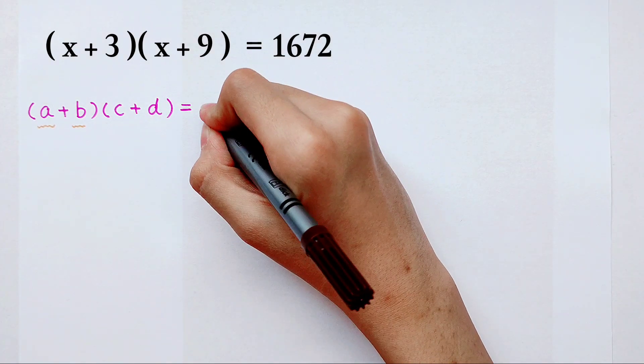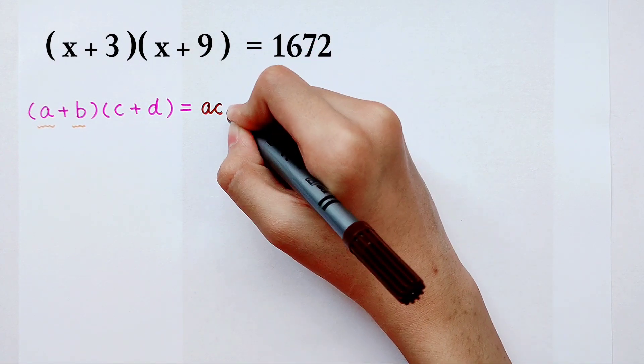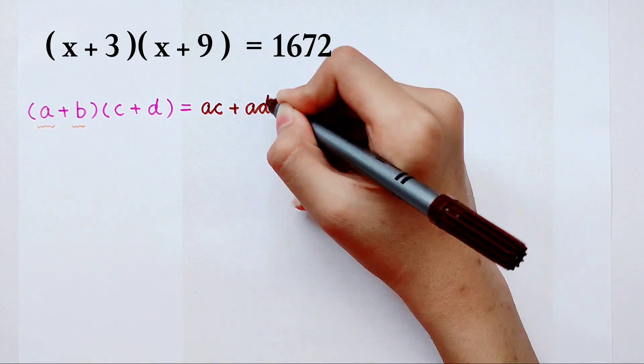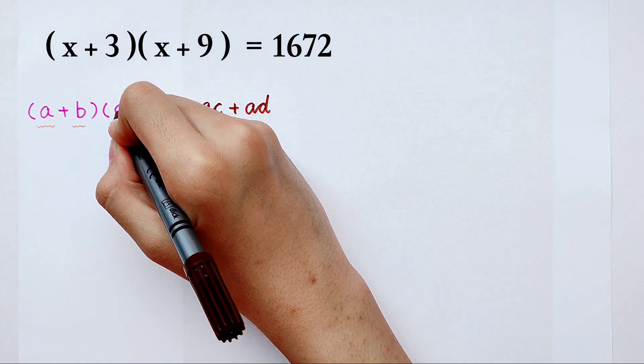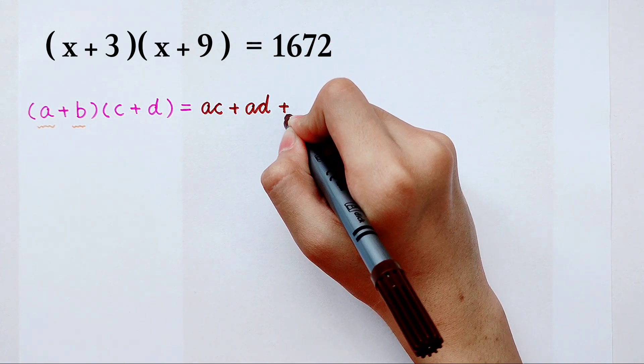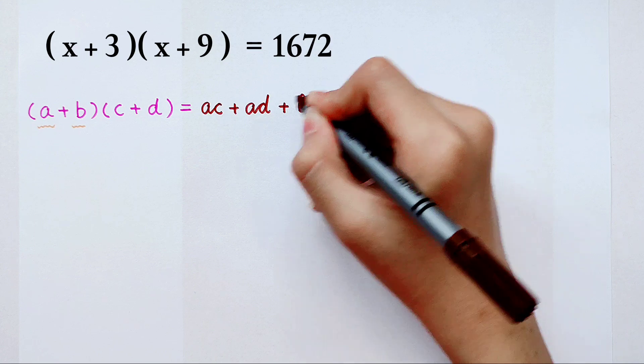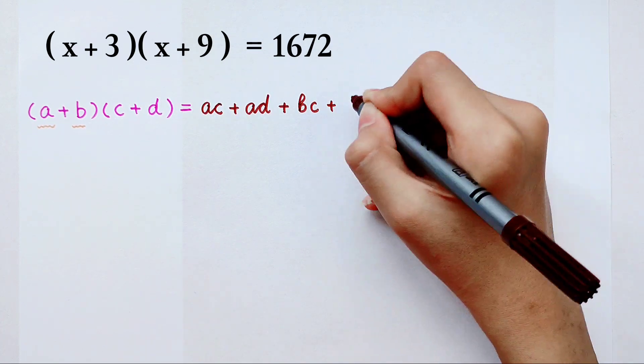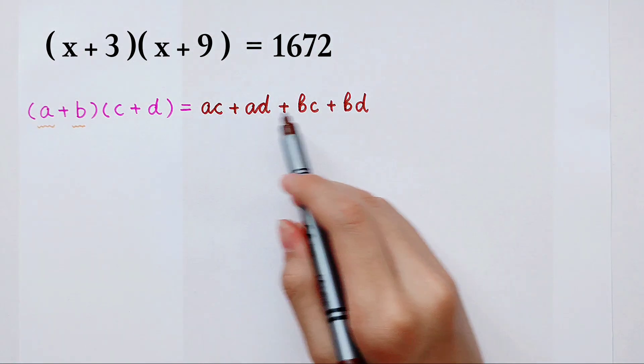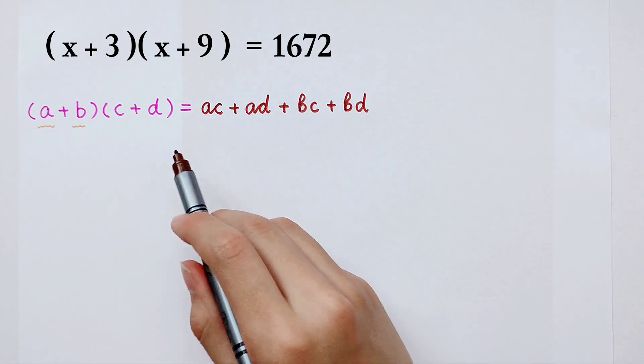And then you can get a times c then plus a times d. A times here c and then plus a times here d. And then it's the term to b. Plus b times here c and then plus b times here the d. The term which is expanded is like this.